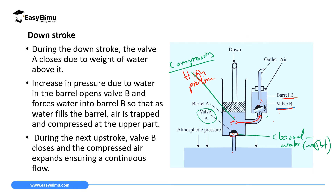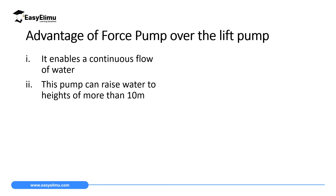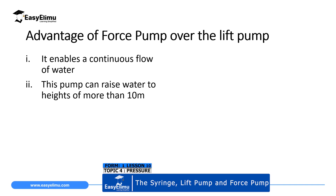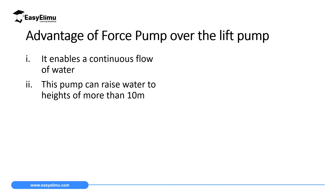The force pump has advantages over the lift pump. First, it enables continuous flow of water — you have two tanks, and once the first tank is filled it transfers to the second tank, so someone can tap from the second tank even when you are not doing upstrokes and downstrokes. This is contrary to the lift pump, where you must constantly do upstrokes and downstrokes to get water out of the spout. Second, this pump can raise water to a height of more than 10 meters.